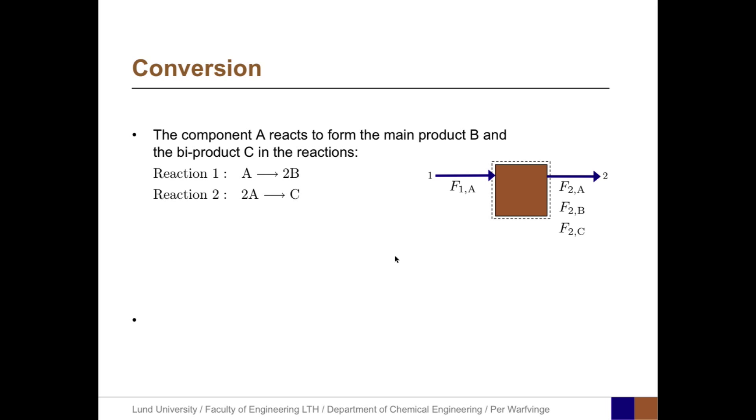Then we can draw a system chart with the stream variables shown to the right. F1A entering the system, F2A, F2B, and F2C leaving the system. We then define the conversion of A as the amount converted of A divided by the influx of A. This can also be expressed as the difference between the input flux of A minus the output flux of A divided by the input flux of A. In terms of stream variables, this can be expressed as 1 minus F2A divided by F1A.